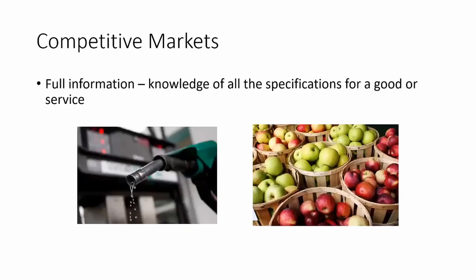Full information means having knowledge of all specifications for a good or service. If we think about apples, we know what they taste like, we know there are different kinds, and we know whether we want a Granny Smith or a Gala apple at the grocery store. Same for gasoline — we have full information on the gasoline we need to run our car. When we go to the pump, whether we're buying 87, 89, or 93 premium gasoline, we know the price and all the specs. That's all full information means: we know what we're buying.